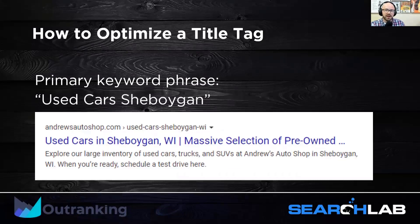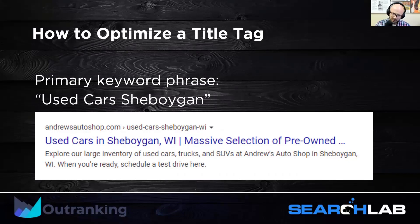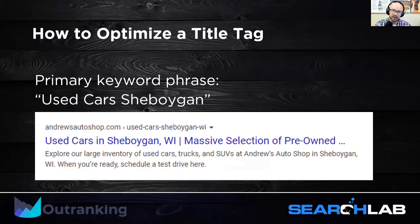Here's another example. Say I'm a used car dealer in Sheboygan, Wisconsin. 'Used cars in Sheboygan, Wisconsin' is the key phrase I want to rank for. Then 'Massive selection of pre-owned vehicles' — I'm elaborating on that keyword phrase in a way that's digestible and engaging for people to read.